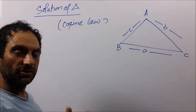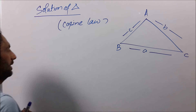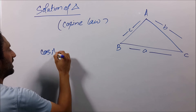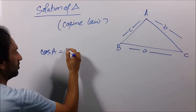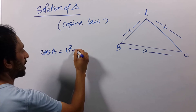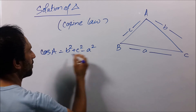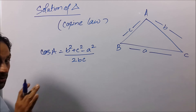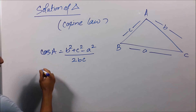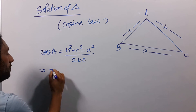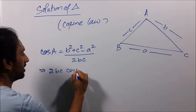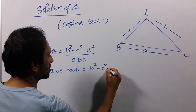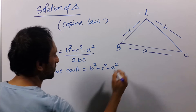These are three different formulae. If I write cos A, that is equal to b² + c² − a² upon 2bc. We can also write it as 2bc·cos A equals b² + c² − a².